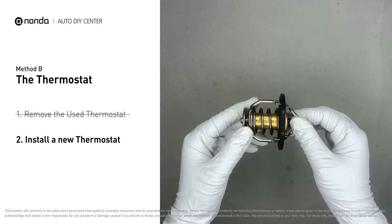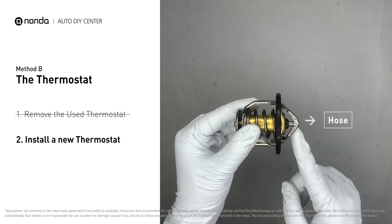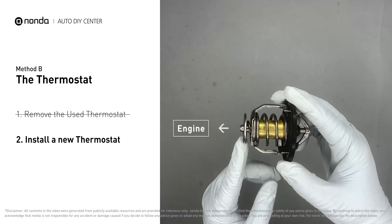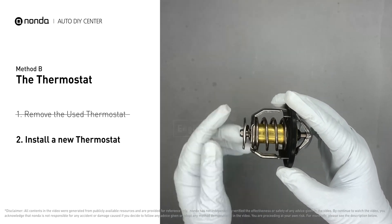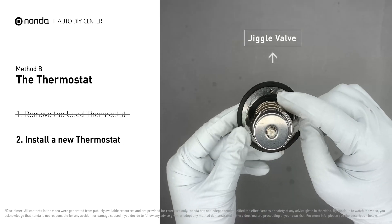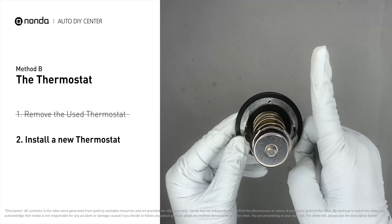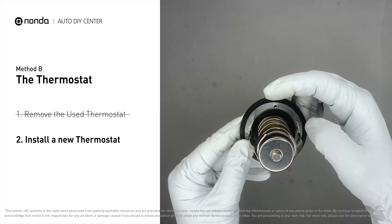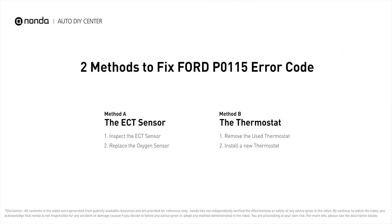To install the thermostat correctly, make sure the short end goes toward the hose and the deep end goes toward the engine. When installing it back into the engine, make sure the jiggle valve is pointed straight up to the top of the engine so that air can get through the system.